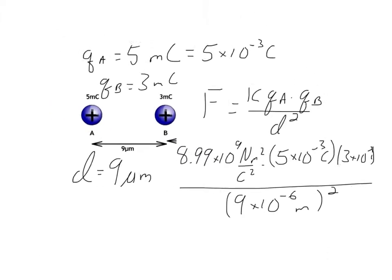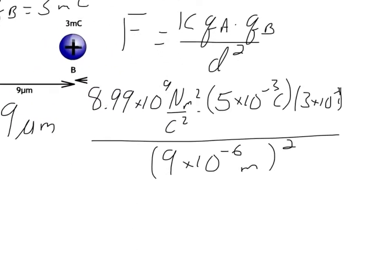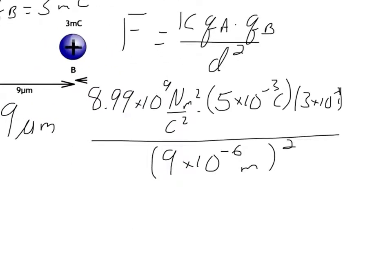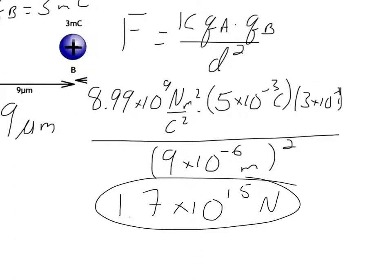And so if you complete the math, put that in your calculator, do a little math, you end up with an answer of 1.7 times 10 to the 15th Newtons. And that's how we solve a simple Coulomb's law equation.